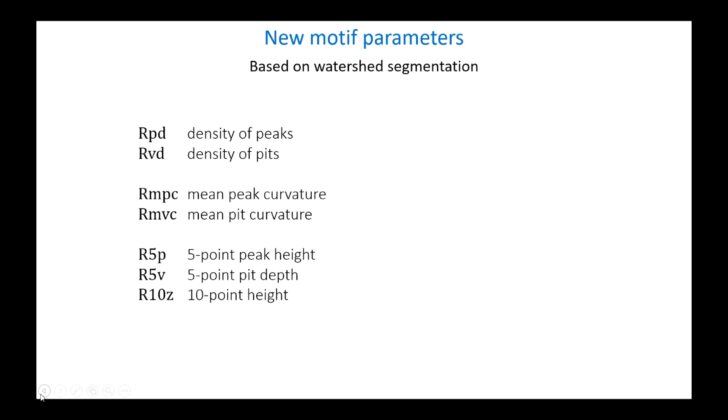Motif's parameters, linked to watershed segmentation, first appeared in ISO 25178-2 for surfaces. They are now available for profiles and make it possible to quantify significant peaks and pits after wolf pruning. The density of peaks or pits evaluates their number per unit length. The curvature allows us to evaluate whether the peak or pit is narrow or wide, which implies different tribological behavior. The last three parameters are calculated only on significant peaks or pits retained by pruning after segmentation. They are therefore more robust and representative of the behavior of the surface.